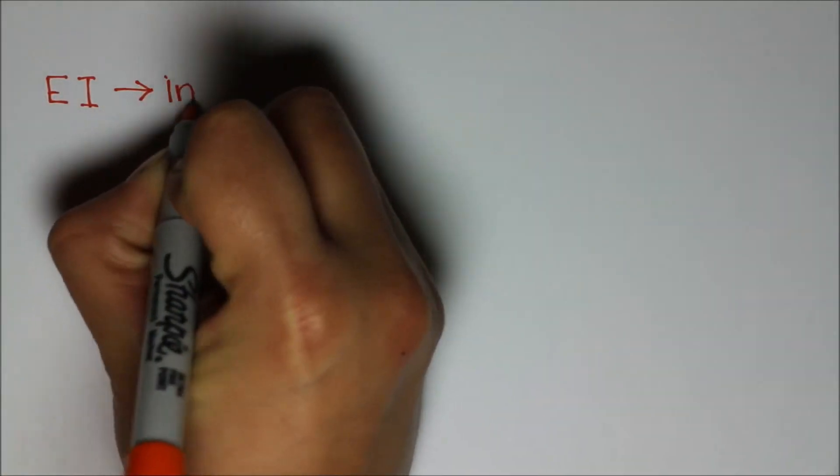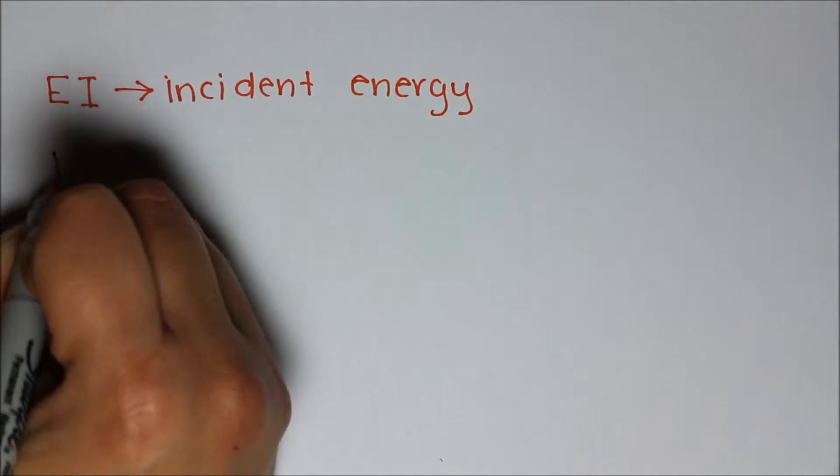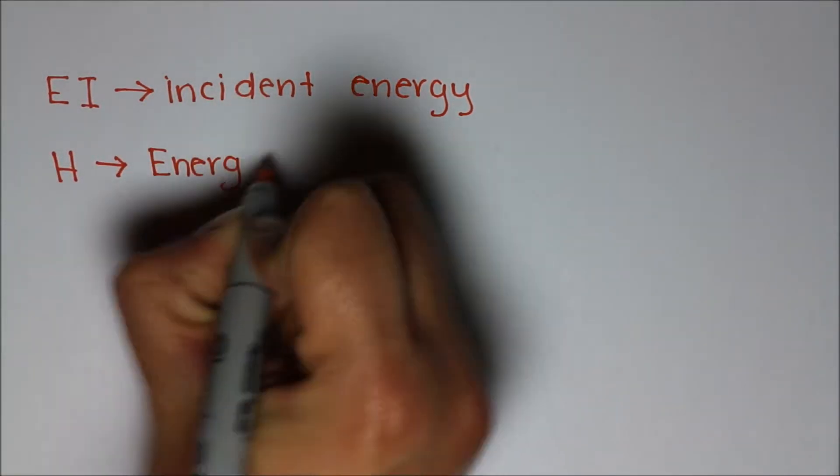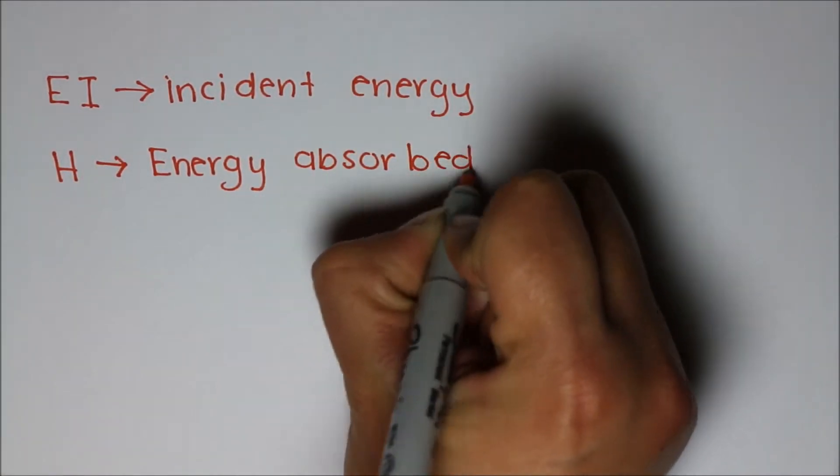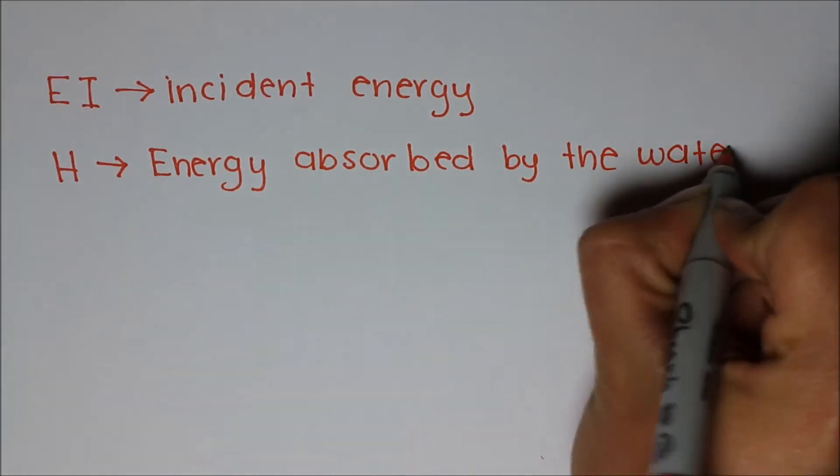We will now calculate EI, which is the incident energy, H, which is the energy absorbed by the water, and L, which are the losses.